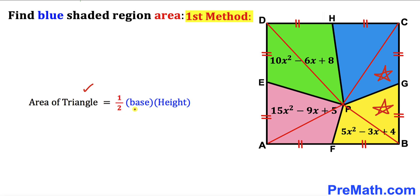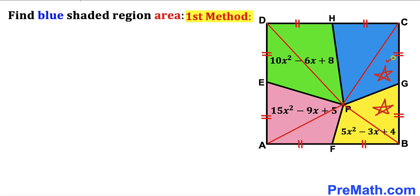Recalling the area of a triangle formula — area equals one half times base times height — we can see that the base for both the blue and yellow triangles is the same, and likewise their height at point P is the same. Therefore, the area of the blue triangle equals the area of the yellow triangle. Let's call that area lowercase a.